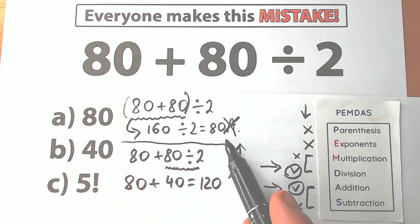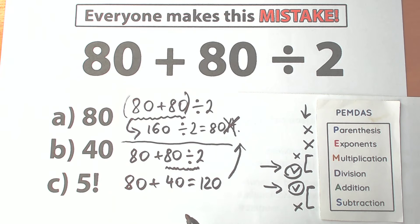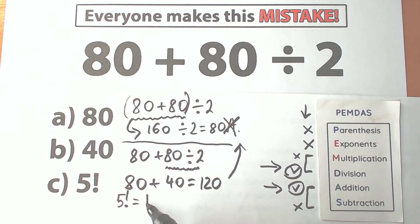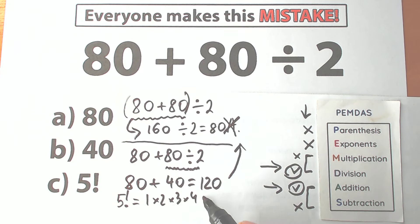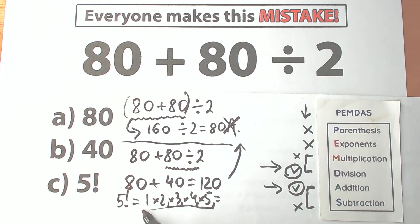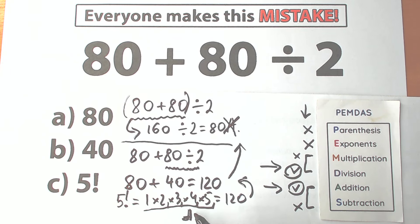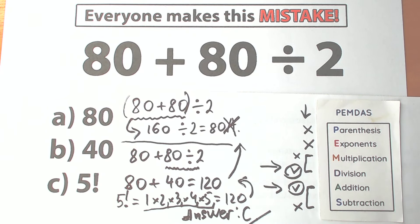I hope you understand why 80 is absolutely wrong and why 40 is absolutely wrong as well. But what about 5 factorial? Here's the tricky moment: 5 factorial equals the product from 1 to 5, so 1 × 2 × 3 × 4 × 5. That gives us 2 × 3 = 6, then 6 × 4 = 24, and 24 × 5 = 120. So 5 factorial equals 120 — the same as our answer! Therefore our correct answer is option C. According to this challenge the correct answer is 120, and according to the test the correct answer is option C.